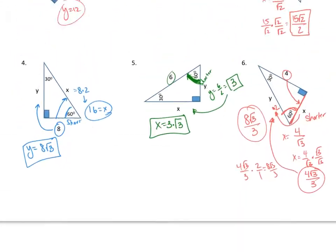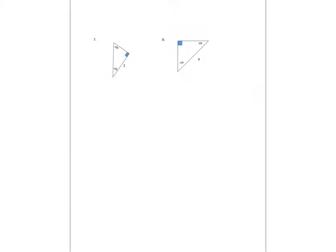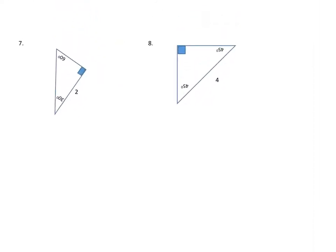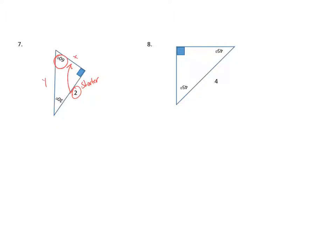On the next problem, the 60-degree angle is identified and the longer leg is 2. Going from a longer leg to a shorter leg, I divide by root 3. Rationalizing gives x equals 2 root 3 over 3. Going across the 60 to the hypotenuse, I multiply by 2, so y equals 2 root 3 over 3 times 2, which gives 4 root 3 over 3.